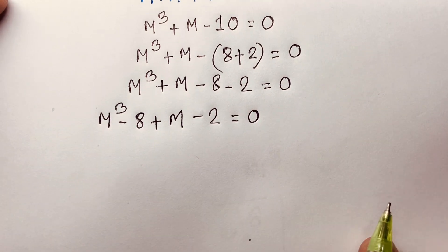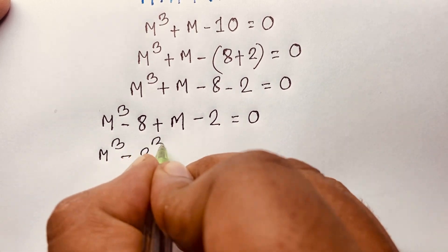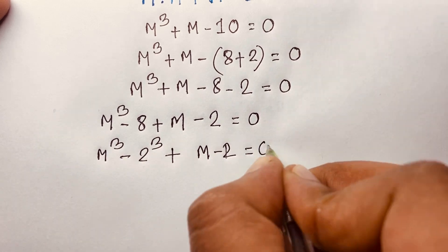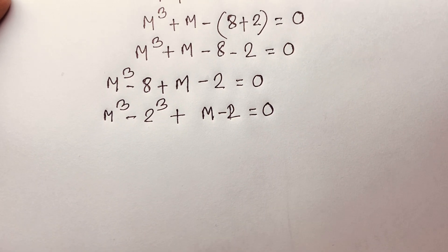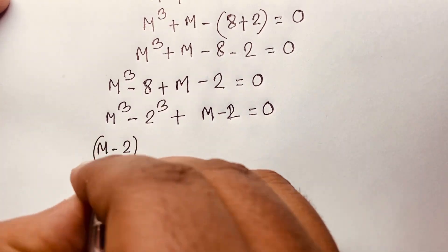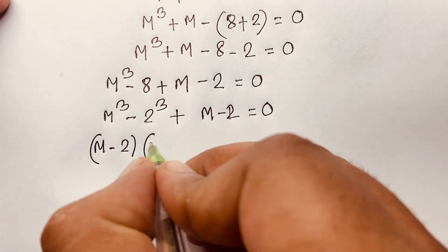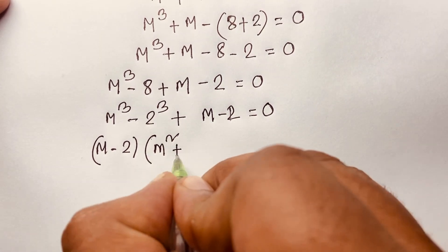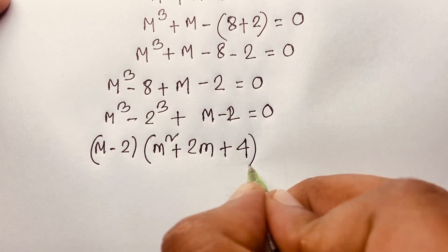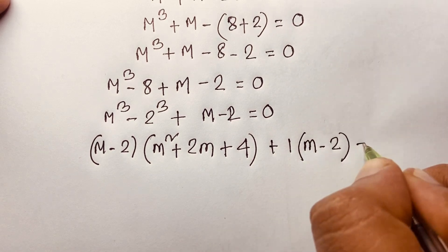Now here m cubed minus 8 is m cubed minus 2 cubed. We know that a cubed minus b cubed equals a minus b times a squared plus ab plus b squared. So this becomes m minus 2 times m squared plus 2m plus 4, and plus 1 times m minus 2 is equal to 0.